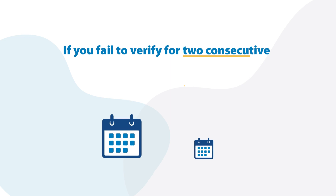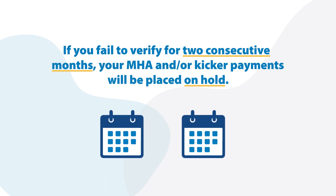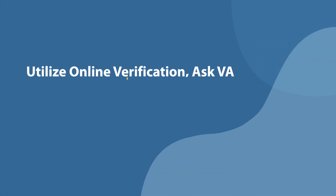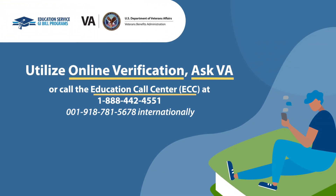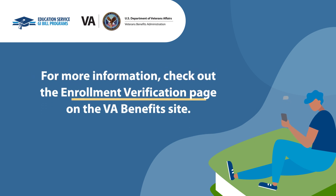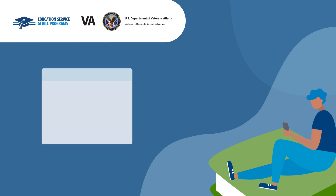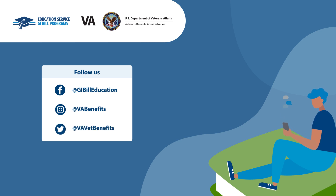If you fail to verify for two consecutive months, your MHA and/or kicker payments will be placed on hold, and you will need to utilize online verification, Ask VA, or call the Education Call Center. For more information, check out the Enrollment Verification page on the VA Benefits site. Follow us on Facebook, Instagram, and Twitter to stay in the loop on all things GI Bill.